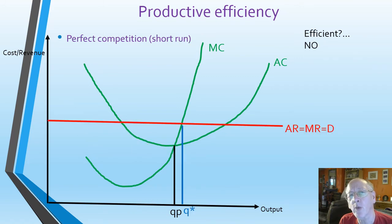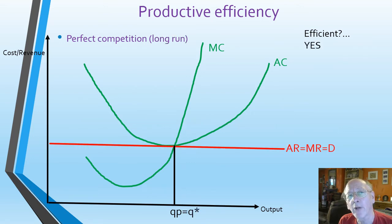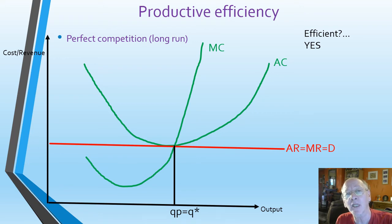What about perfect competition with that flat AR equals MR equals P curve? In the short run, they are not productively efficient — to be productively efficient they'd need to be producing at the bottom of the AC curve at QP, but they're producing at the profit max point where MC equals MR. So they are not normally productively efficient in the short run. However, in the long run, firms move into the market where others are making profits, increasing supply and reducing price until those super normal profits are competed away. We actually finish up on the bottom of the AC curve — so in the long run, perfectly competitive markets exhibit productive efficiency.